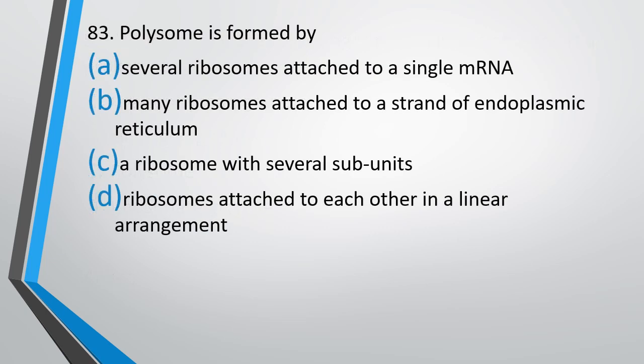Question number 83. Polysome is formed by: several ribosomes attached to a single mRNA, many ribosomes attached to a strand of endoplasmic reticulum, ribosome with several subunits, ribosomes attached to each other in linear arrangement. Polysome is formed by - correct answer is option A, several ribosomes attached to a single mRNA strand.